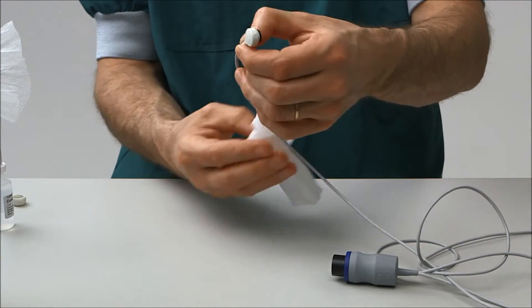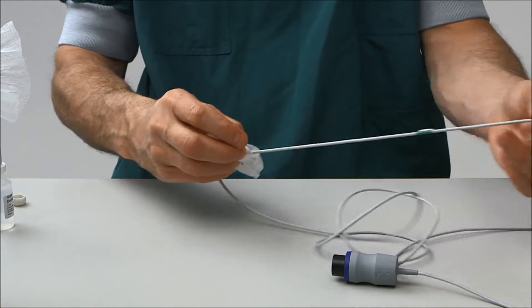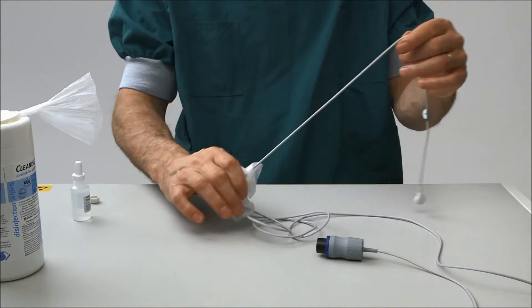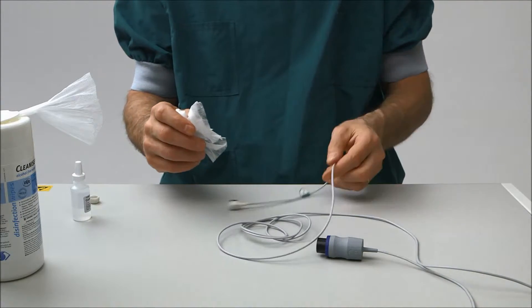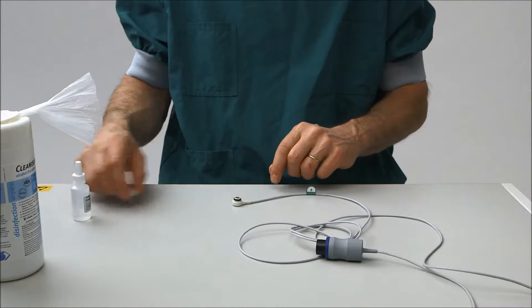Avoid exposing the electrode cable to any product based on isopropanol, propyl alcohol, or alcohol, as prolonged exposure to these products may damage the electrode cable. Please refer to the manual for complete instructions on cleaning and maintenance.